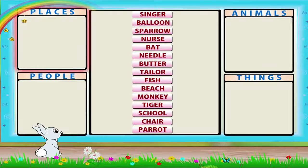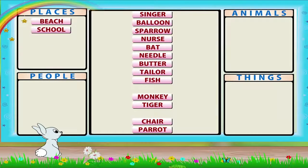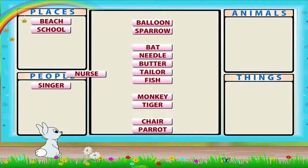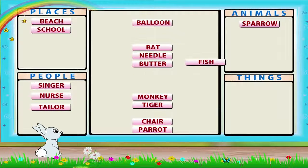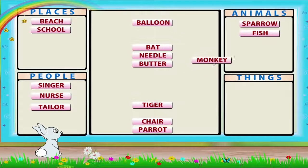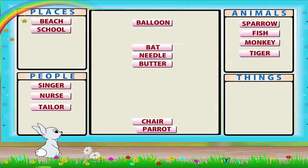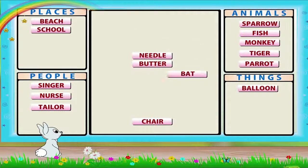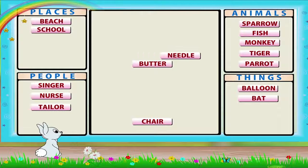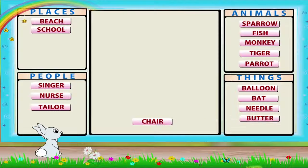Places: beach, school. People: singer, nurse, tailor. Animals: sparrow, fish, monkey, tiger, parrot. Things: balloon, bat, needle, butter.